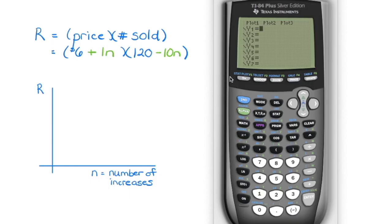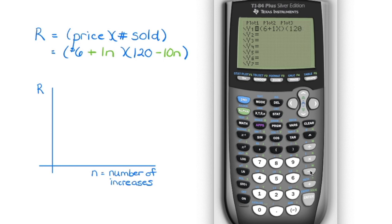When we go to graph this, we go into y equals and enter it in factored form. We don't want to make a mistake converting to standard form. So we enter: bracket, 6 plus N, close bracket, times bracket, 120 minus 10N, close bracket. Then we look at what the graph looks like.